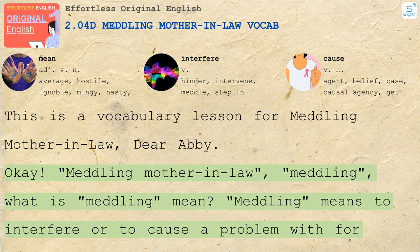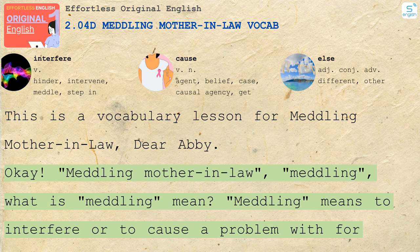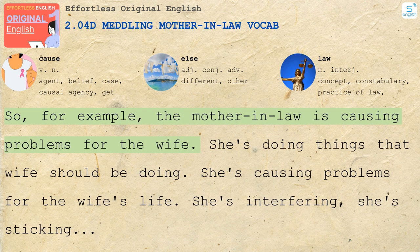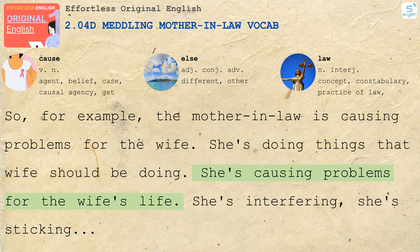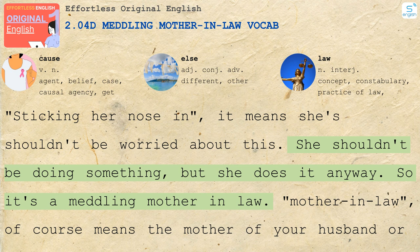Meddling — what does meddling mean? Meddling means to interfere or to cause a problem for somebody else. It means you get involved with another person's life when you shouldn't. For example, the mother-in-law is causing problems for the wife. She's doing things the wife should be doing, causing problems for the wife's life. She's interfering — sticking her nose in. It means she shouldn't be doing something, but she does it anyway.